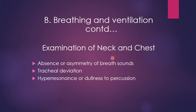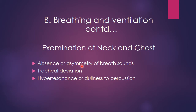Examination of the neck and chest involves looking for absence or asymmetry of breath sounds on each side, tracheal deviation using the three-finger method, and hyper-resonance or dullness to percussion. A pneumothorax will be hyper-resonant on that side; hemothorax will be dull. The trachea is deviated to the opposite side in both conditions, and the affected side moves less with respiration. These signs direct further investigation toward pneumothorax or hemothorax.